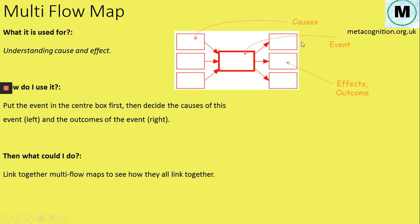You could even draw more things coming off here. So what did these effects lead to? What other events did they lead to? Because often the effects of one event cause other events, so the effects of one event go on to cause different events.